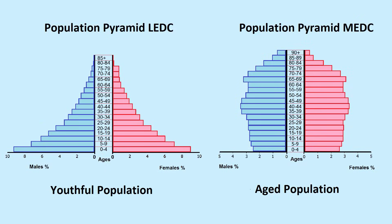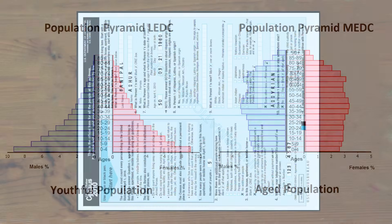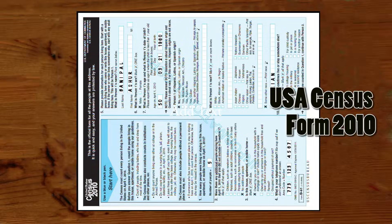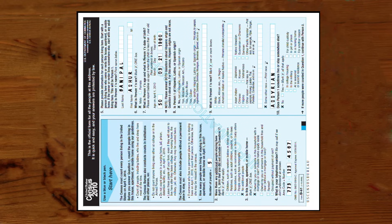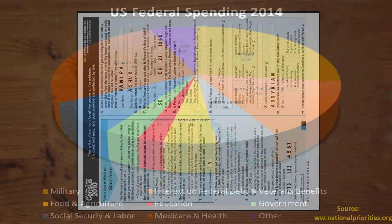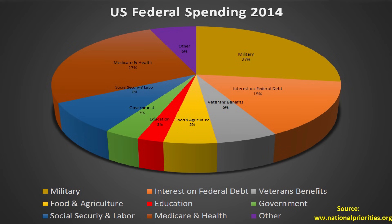Population structures differ markedly between less economically developed countries and more economically developed countries. The demographic information we see on pyramids is collected by governments during a census. This information helps them to assess the present and future needs of a country.